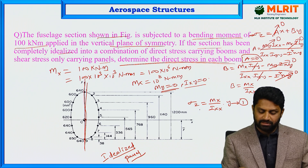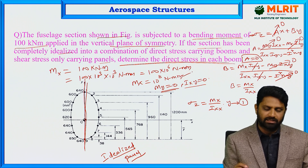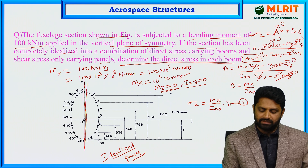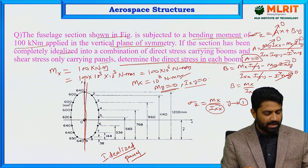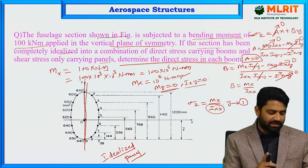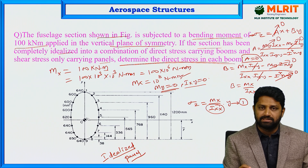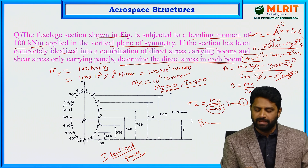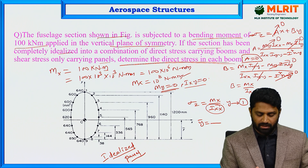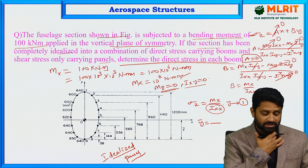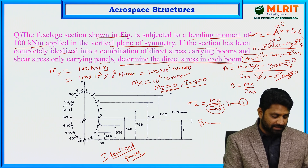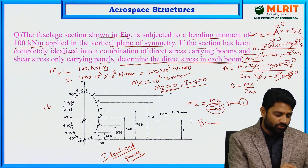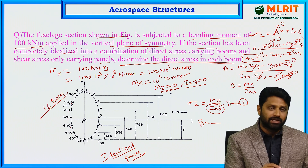In this formula, MX is known as 10⁸ N·mm, and we need to calculate the moment of inertia. Since the fuselage section is symmetrical about the vertical axis, we first find Ȳ, the centroid position. There are 16 booms in total, numbered 1 through 16.